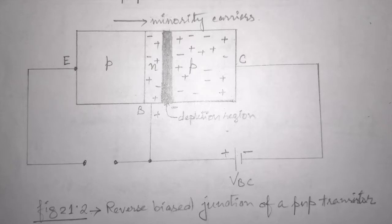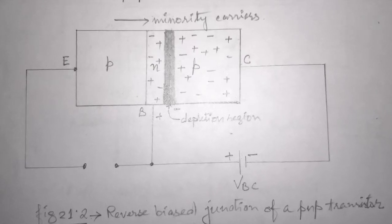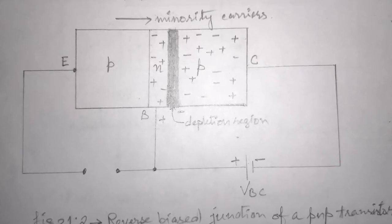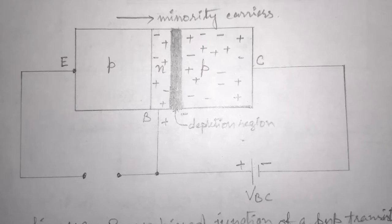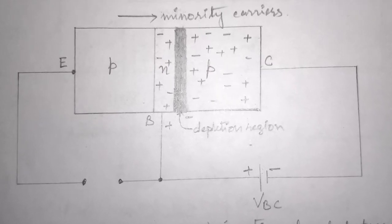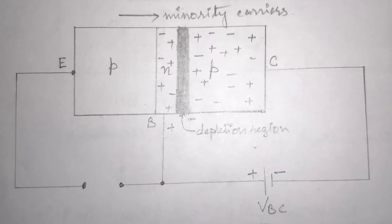Now, let us remove the base emitter junction bias, as shown in figure 21.2, and reverse bias the base collector junction. This will result in zero majority carrier current and only minority carrier current flows. So we can see the operation of one junction forward biased and another junction reverse biased.